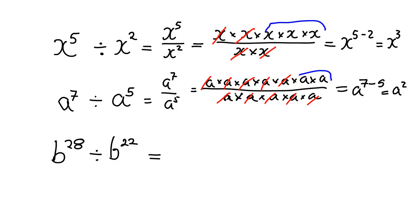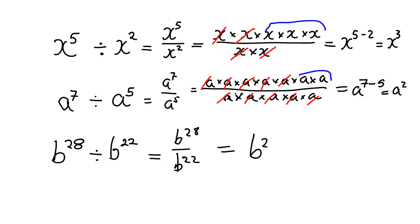Obviously you don't always want to be writing out the whole multiplication. For example, if you've got something like b to the 28 divided by b to the 22, the rule will just help you. But let's think it through. If we've got b to the 28 over b to the 22, at the top you'd have 28 b's all multiplied together, at the bottom 22 b's. Those 22 b's at the bottom cancel with 22 of the 28 b's at the top. You had 28, 22 got cancelled, so you're left with 6 b's multiplied together — in other words, b to the 6.